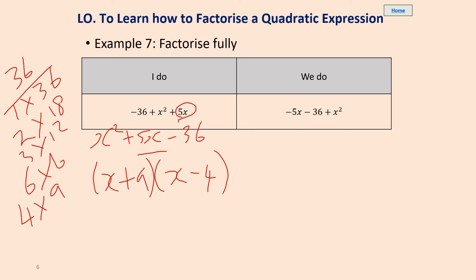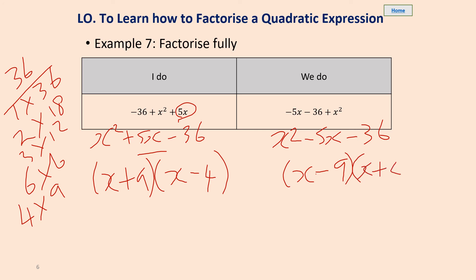Have a go at the we-do. Put it in the original format. Pause the video and have a go at this question. You should get x squared minus 5x minus 36, with brackets (x − 9)(x + 4). Minus 9x plus 4x gives us minus 5x, and then minus 36.